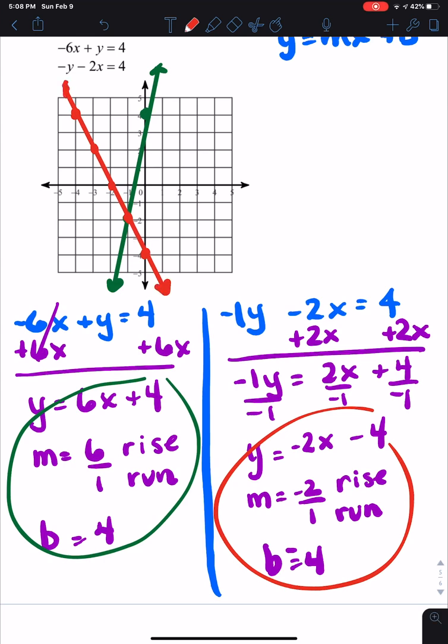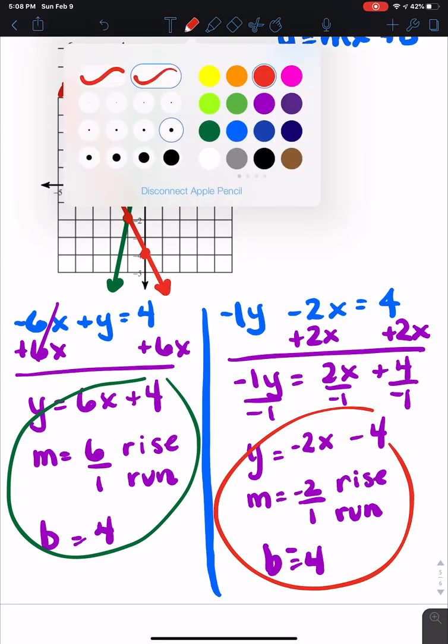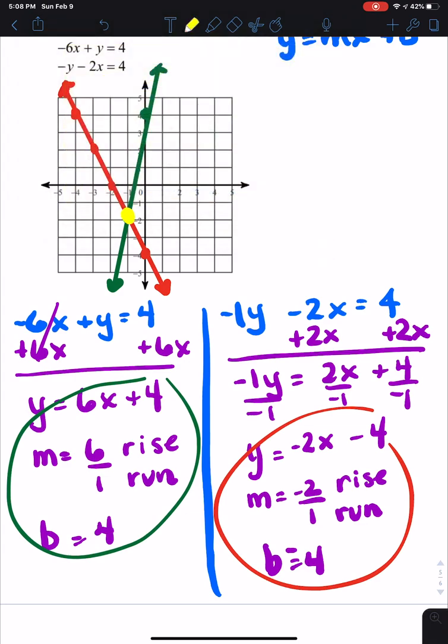Now remember, with the solution, obviously we want to know where it hits. And we can tell it hits right there. But in order to be able to have it as a solution, I've got to actually tell what the point is. So that would be over negative 1 down negative 2. So that would be my solution.